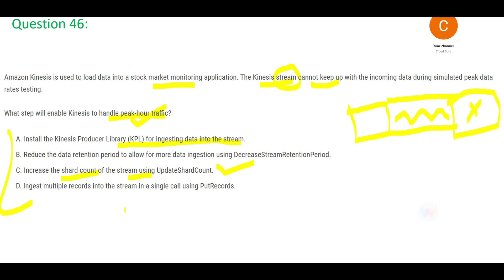Option B says reduce the data retention period to allow more data ingestion. If the water is not flowing and it goes away — you don't want to lose that data. Option D says ingest multiple records in a single call — but whether you put one liter at a time or five liters in one go, the bottleneck is still here. The pipe is clogged; you have to clear the pipe. So increasing the shard count is the final answer.